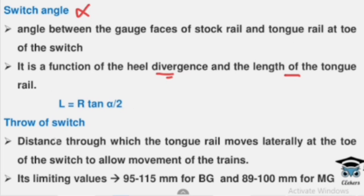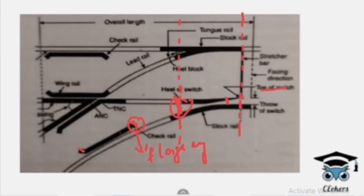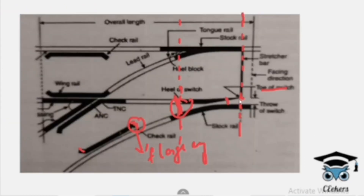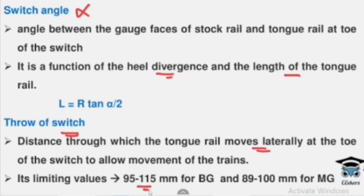Throw of switch means the distance through which the tongue rail moves laterally at the toe of switch to allow movement of the train. The tongue rail is a movable part and a rail section. The tongue rail is flexible and can move. How much distance it moves laterally is called the throw of switch. For broad gauge, this distance is 95 to 150 mm; for meter gauge, it is 89 to 100 mm.